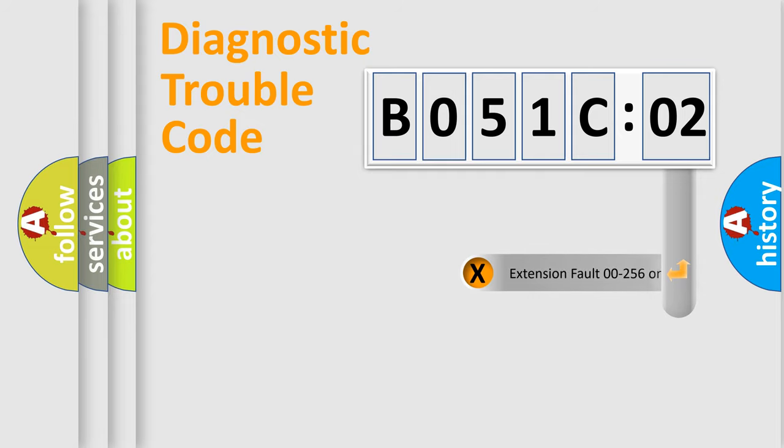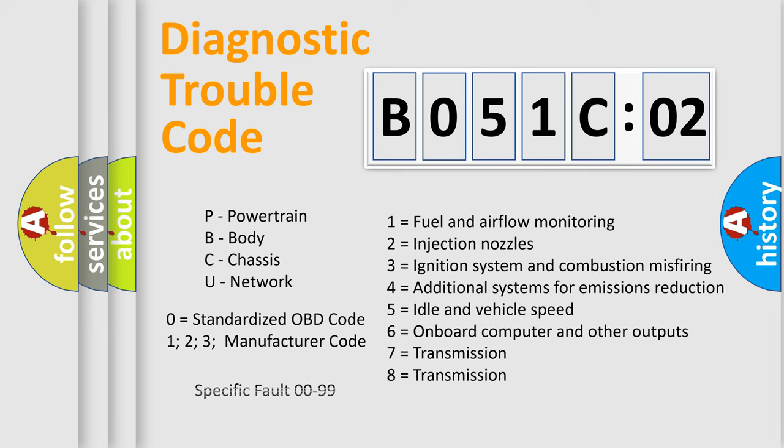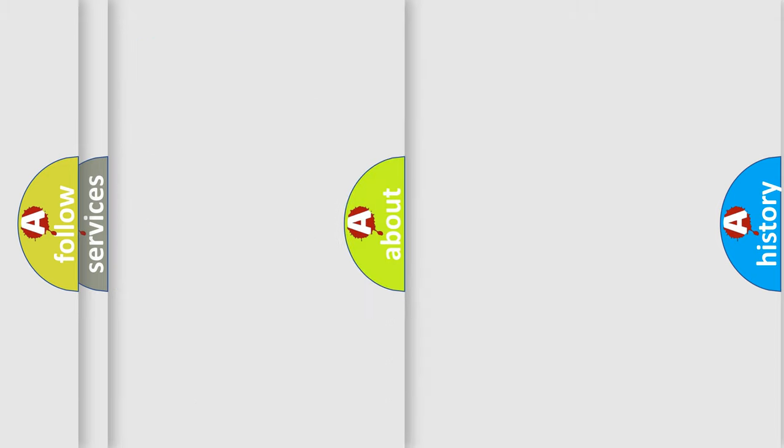The add-on to the error code serves to specify the status in more detail, for example, a short to the ground. Let's not forget that such a division is valid only if the other character code is expressed by the number zero.